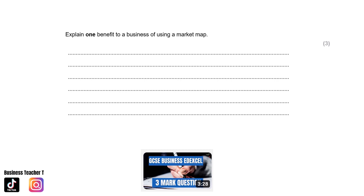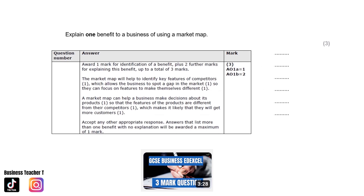Market Map questions. Explain one benefit to a business of using a Market Map. The Market Map will help to identify key features of competitors, which allows the business to spot a gap in the market so they can focus on features to make themselves different. Or, a Market Map can help a business make decisions about its products so that the features are different from competitors, which makes it likely that they will attract more customers.